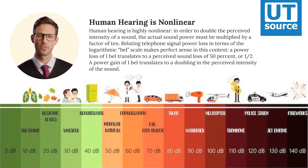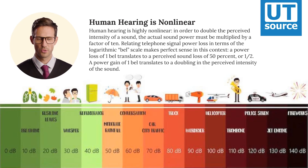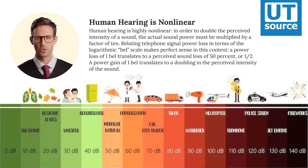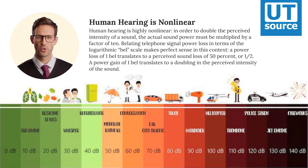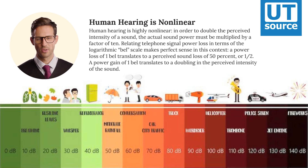Human hearing is highly nonlinear. In order to double the perceived intensity of a sound, the actual sound power must be multiplied by a factor of 10. Relating telephone signal power loss in terms of the logarithmic bell scale makes perfect sense in this context. A power loss of one bell translates to a perceived sound loss of 50%, and a power gain of one bell translates to a doubling in the perceived intensity of the sound.